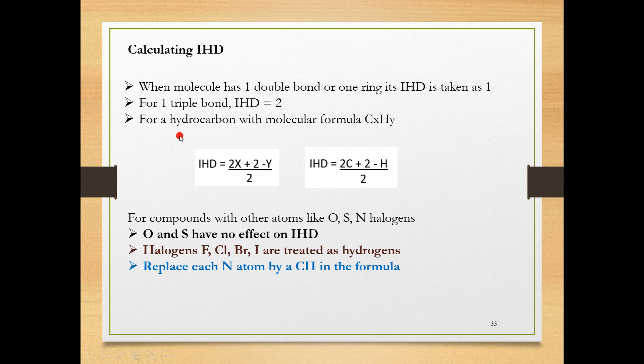For a hydrocarbon with molecular formula CxHy, the IHD formula is: IHD equals 2X plus 2 minus Y upon 2, where X is the number of carbon atoms and Y is the number of hydrogens. I have made it easier: you can directly write it as 2C plus 2 minus H divided by 2. While calculating, C is the number of carbons, H is the number of hydrogens.